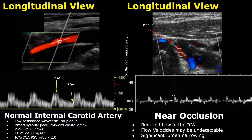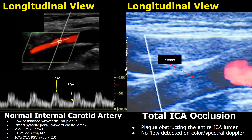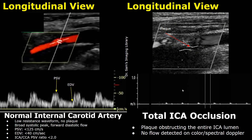In total ICA occlusion, the plaque is obstructing the entire lumen. No flow will be detected on color Doppler or spectral Doppler. In this case, no flow is detected on spectral Doppler, indicating total occlusion. The sample volume is placed at the site of stenosis and no flow is detected.